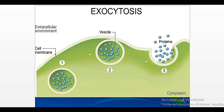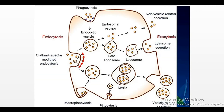The next type of classification of transport depends on the direction of movement of substances. If cells move substances from inside the cell to the outside, such type of transport is named exocytosis.